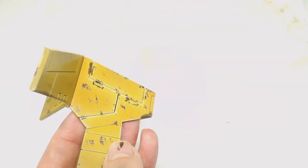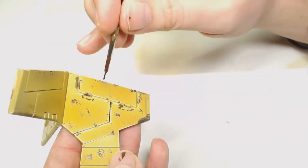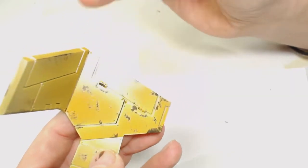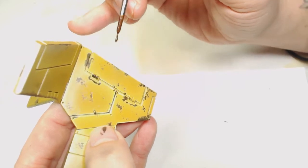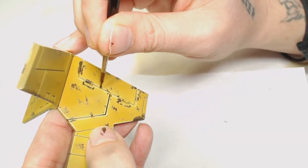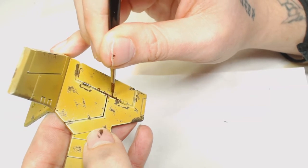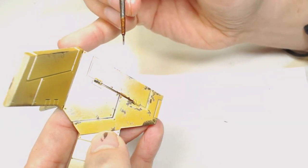As you can tell, the gloss varnish already there is enabling the streaking grime to go straight through all the recesses. So if you don't want to do an oil wash, you can easily just add streaking grime straight to all your gaps and give all the recesses a nice rusted effect.